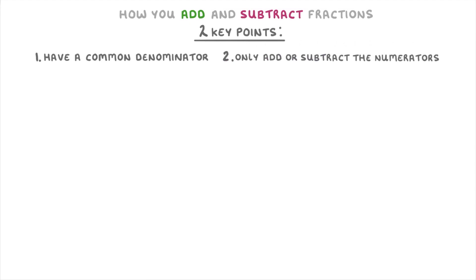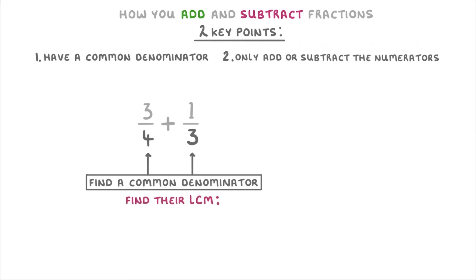So in this sum here where we're trying to add 3/4 and 1/3, the first thing we need to do is find a common denominator, which means that we need to make these two denominators the same number. The best way to do this is to find their lowest common multiple or LCM, which is the smallest multiple that they both have in common. And so in this case that's going to be 12.